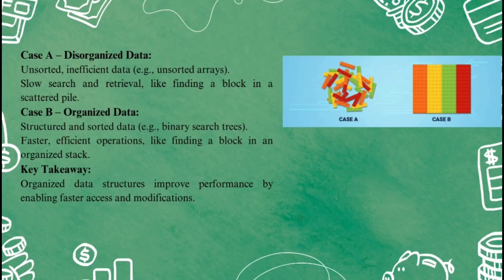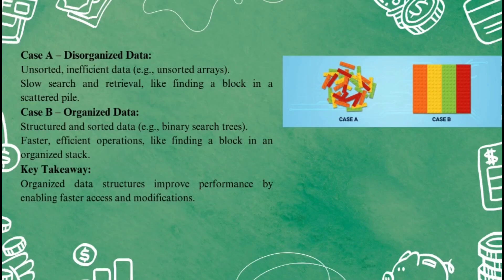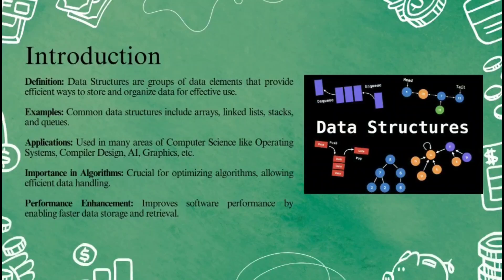They help us organize data in ways that save time and effort. My intention here is to explain why we need data structures in computer systems. Just like our analogy, computers need efficient ways to store, organize, and retrieve data. That's where data structures come in. Whether it's an array, a stack, a queue, or a tree, each type of structure serves a different purpose, making certain tasks easier and faster to perform. The formal definition: data structures are a group of data elements that provide efficient ways to store and organize data for effective use.